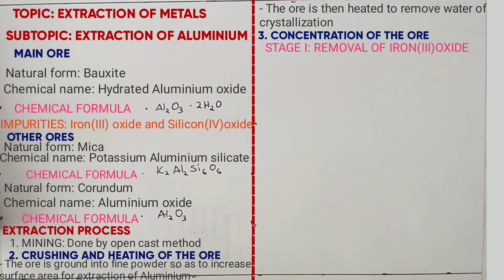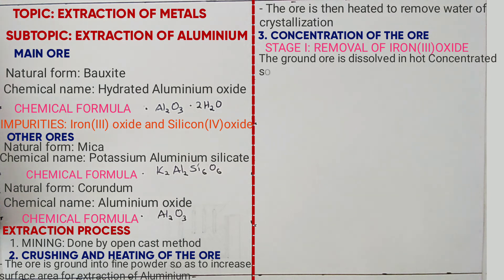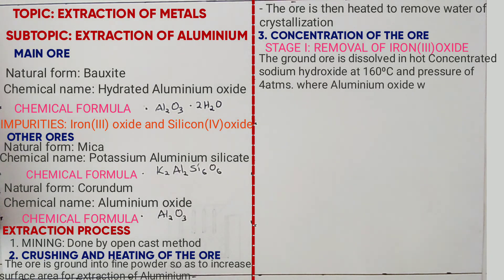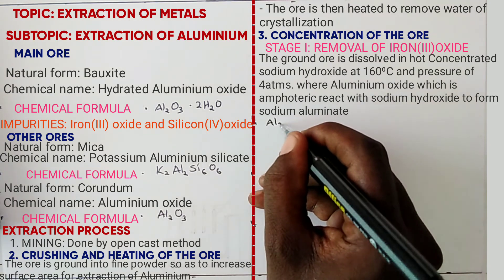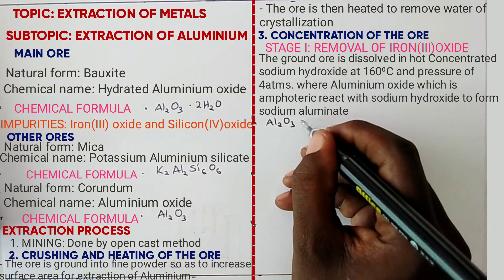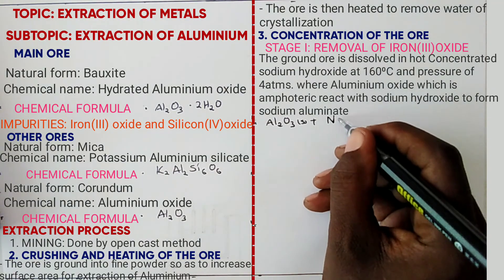Stage 1 is the removal of iron(III) oxide, in which the ground ore is dissolved in hot concentrated sodium hydroxide at 160 degrees Celsius and a pressure of 4 atmospheres. Aluminium oxide, being amphoteric, dissolves in sodium hydroxide to form sodium aluminate. The equation is: aluminium oxide plus sodium hydroxide gives sodium aluminate plus water.